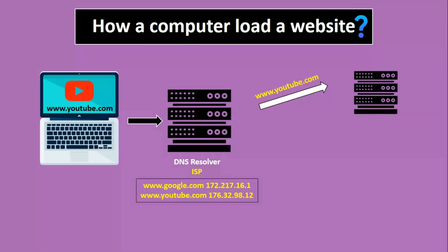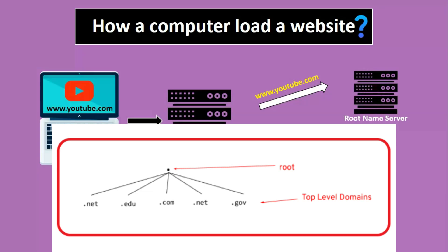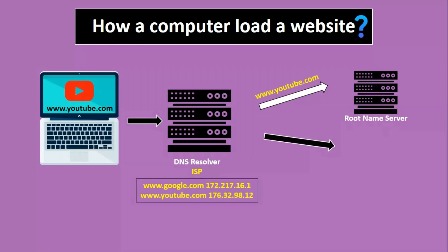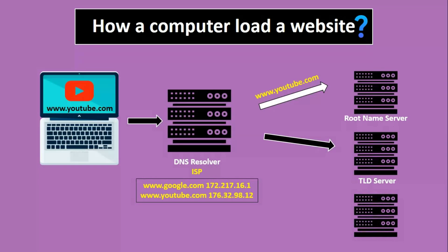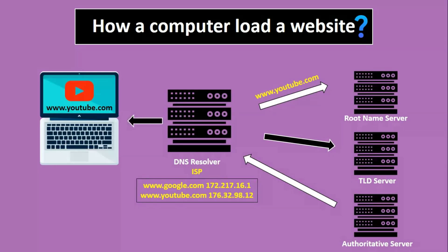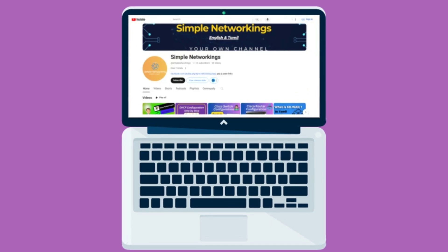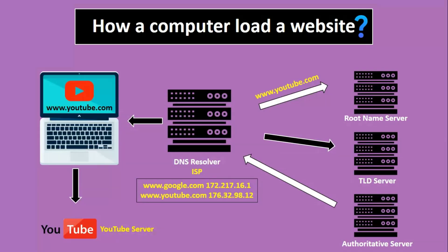The root name server checks whether the domain extension is .com, .org, or .net — here it is .com. Based on the extension, the root name server gives the IP address of the TLD server. The DNS resolver sends the request to the TLD server, which responds with a referral to the authoritative DNS server for the domain. The authoritative DNS server then responds with the IP address associated with the requested domain, like www.youtube.com. The DNS resolver saves the IP address for future requests and sends it back to the computer, which then sends the request to the YouTube server using that IP address.